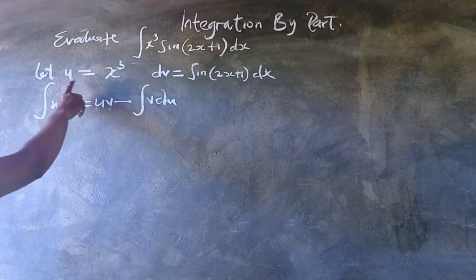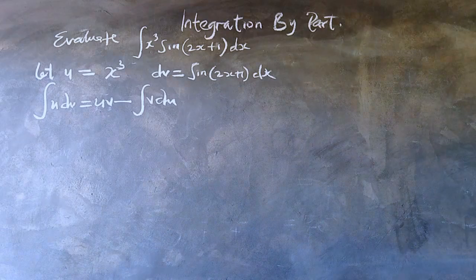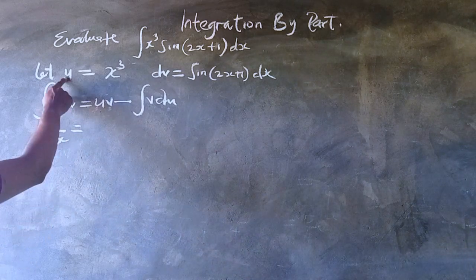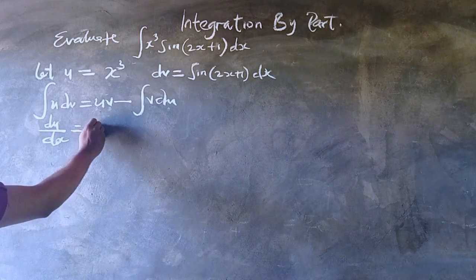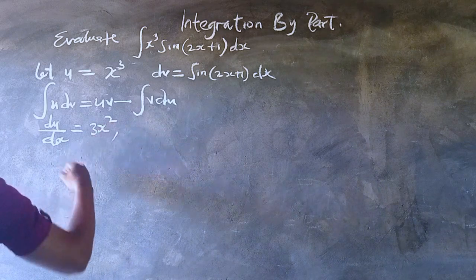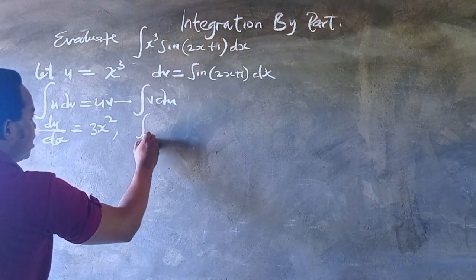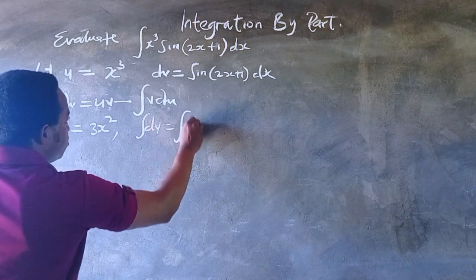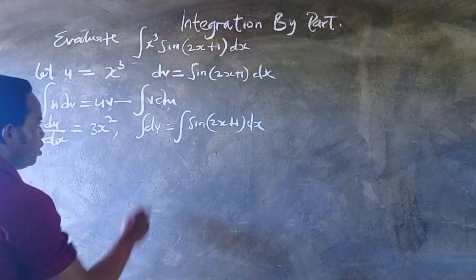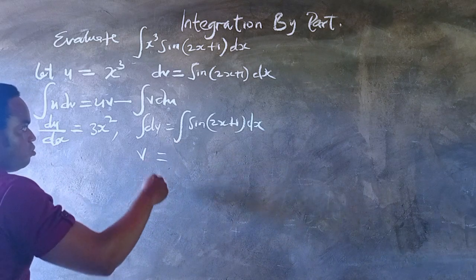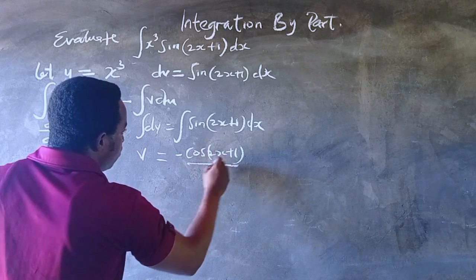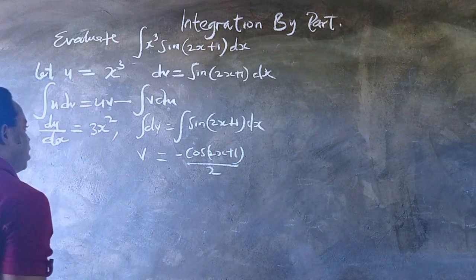We need to obtain v, and we also need to obtain du. What is the expression for du/dx? That is the differential of u with respect to x. That would be 3x squared — 3 multiplied by x raised to power 3 minus 1. When we integrate both sides for dv, we have v equals negative cos(2x+1) all over 2, using u-substitution.